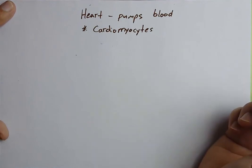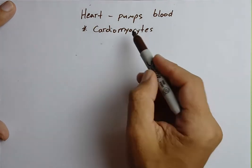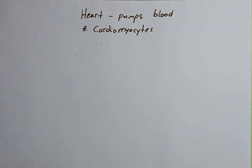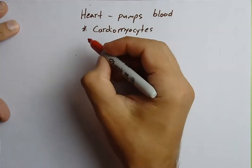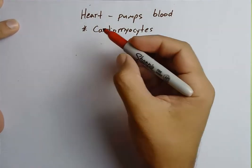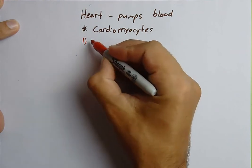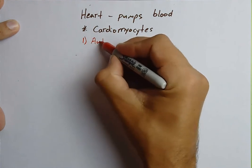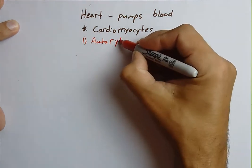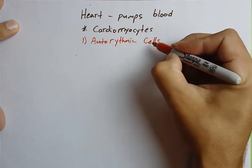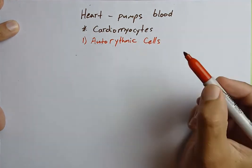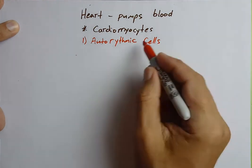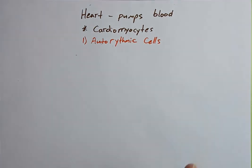We're not done yet. Cardio tells you heart, myo tells you muscle, cytes tells you cells. But there are actually two different types of cardiomyocytes in the heart. The smallest population — less than 1% — doesn't really contract and relax. They're called auto-rhythmic cells. Auto means self, rhythmic means rhythm — these cells create their own rhythm.